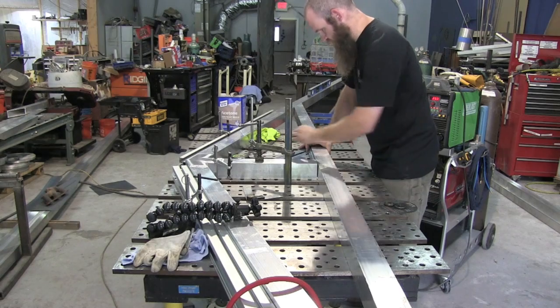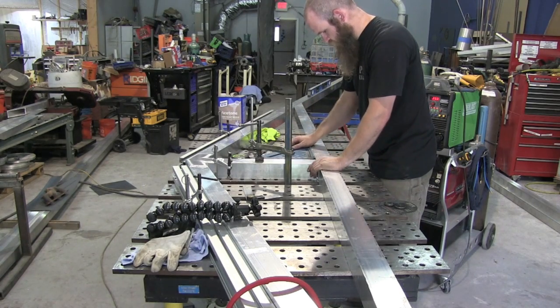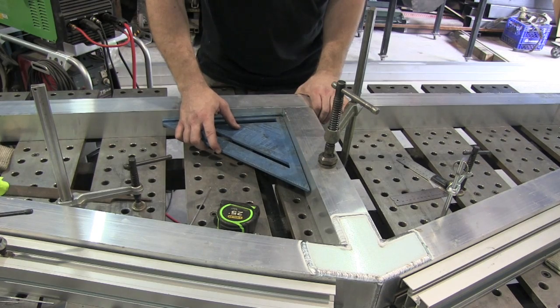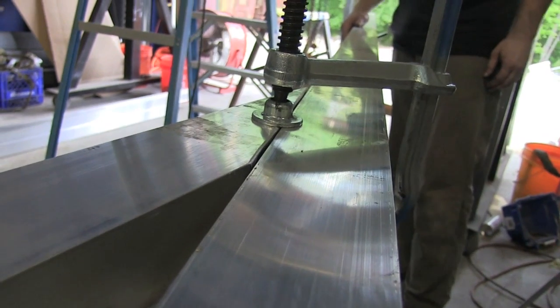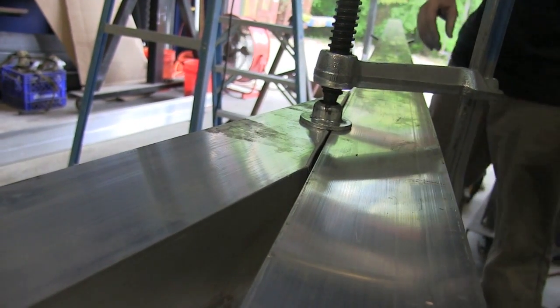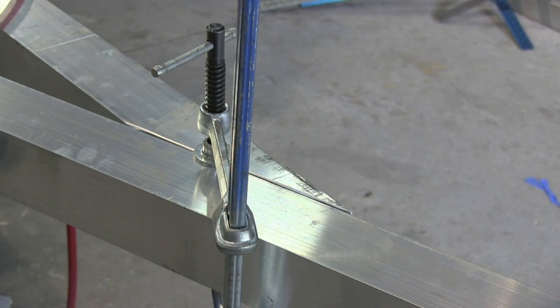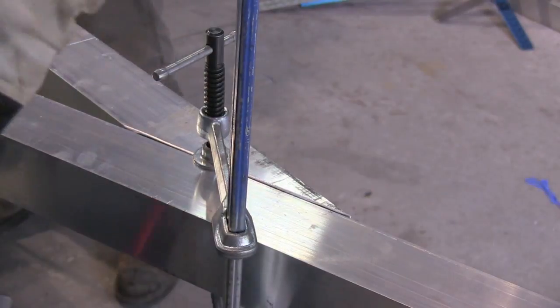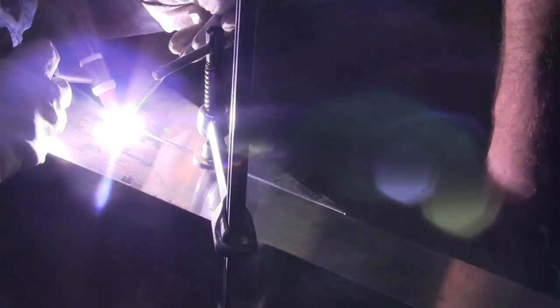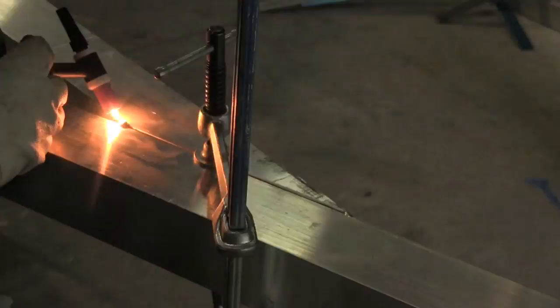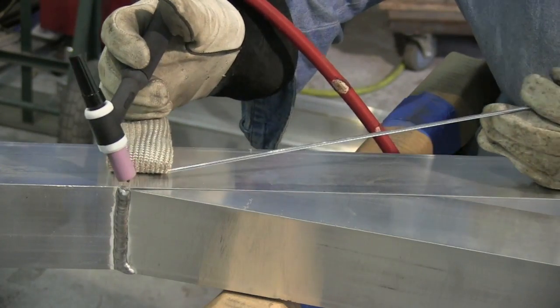So once that was welded up we put this other cross member in here. And you might notice we're varying from the print. JD got verbal permission to do that. I don't really know exactly all the ins and outs, but the main thing is to maintain the overall span and the peak height.